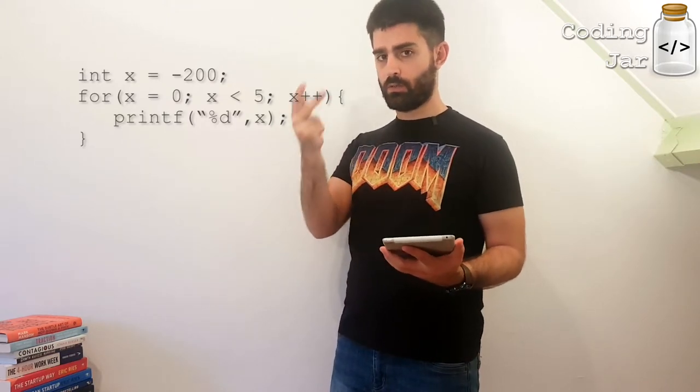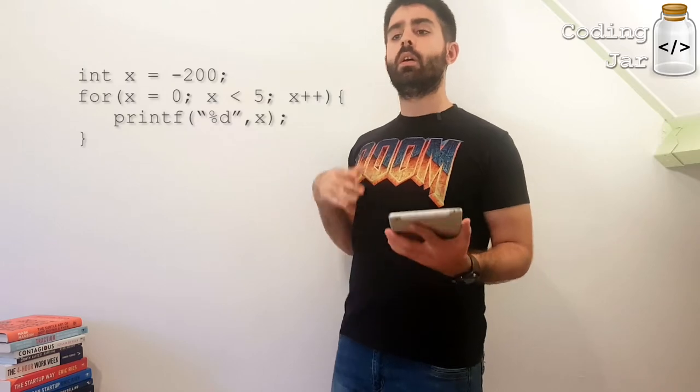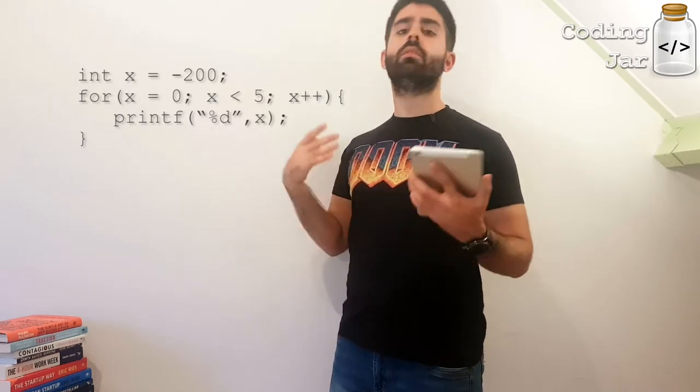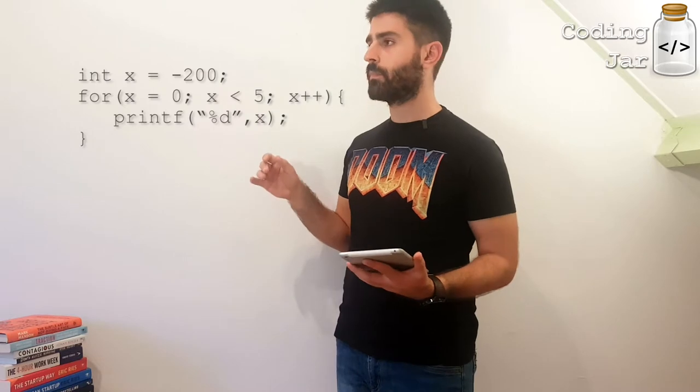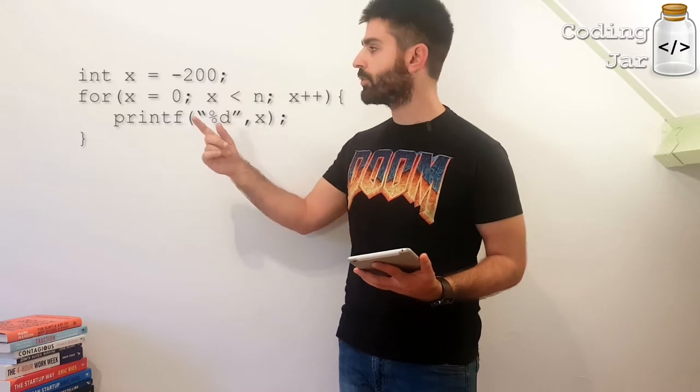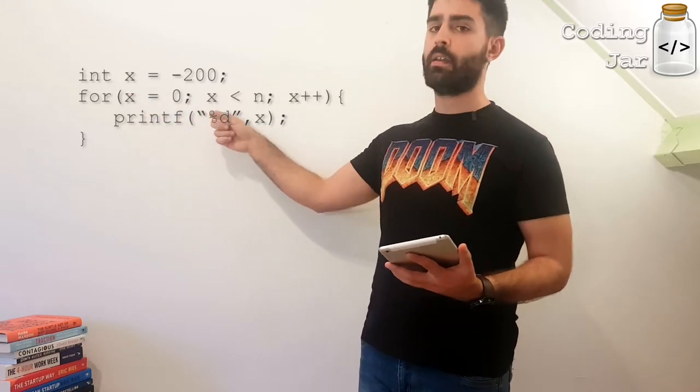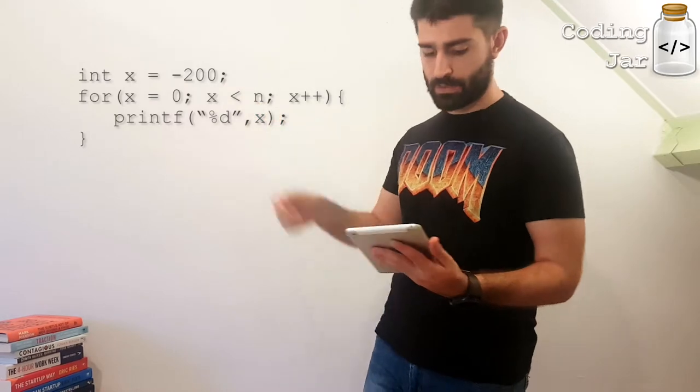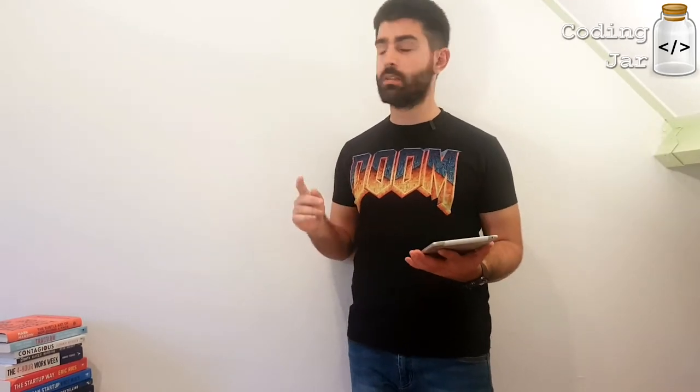This will execute your code five times, zero, one, two, three, four. Then when it gets to five, it will break. So it will not be executed the sixth time. So if you want your program to be executed n times, you would go x equals 0, x less than n, x++.